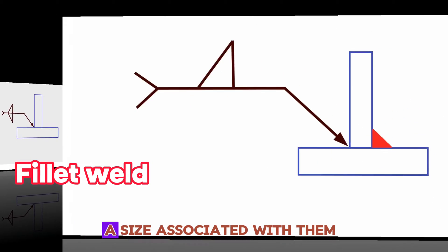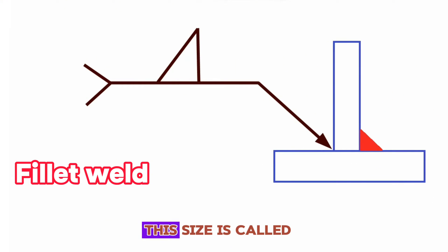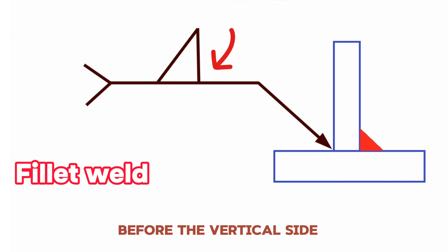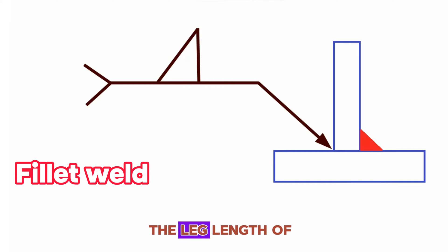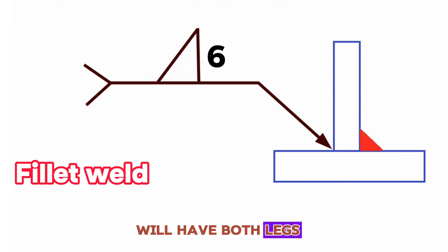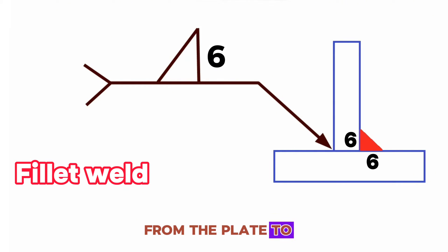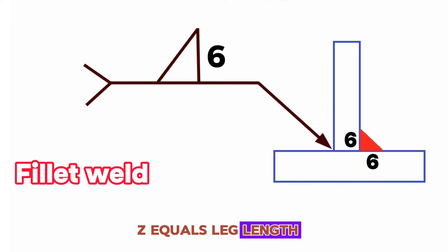Fillet welds may have a size associated with them. This size is called out on the left side of the symbol before the vertical side, and it indicates the leg length of the weld. For example, a 6 mm fillet weld will have both legs of the weld measuring 6 mm from the plate to the toe of the weld. Z equals leg length.